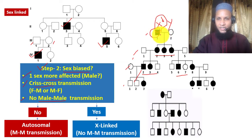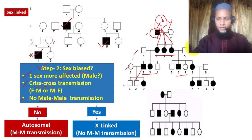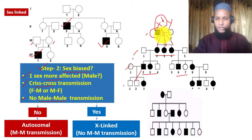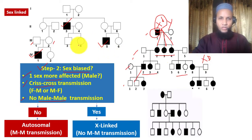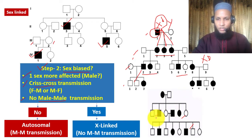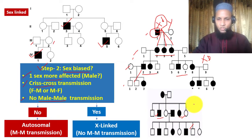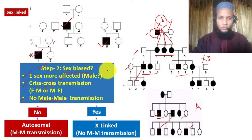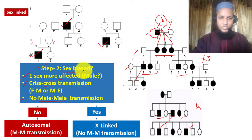Since the affected father carries one defective X chromosome (XD) and a Y chromosome, all daughters will receive the defective X chromosome and carry the disease. Since there is no skipping of generation (dominant) and there is crisscross transmission with no male-to-male transmission, this is X-linked dominant. In contrast, where both males and females are affected and there is male-to-male transmission, that pattern indicates autosomal dominant.